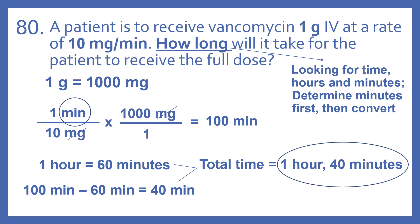We know that 1 hour equals 60 minutes. So, 100 minutes minus 60 minutes equals 40 minutes. Our total time is 1 hour and 40 minutes.